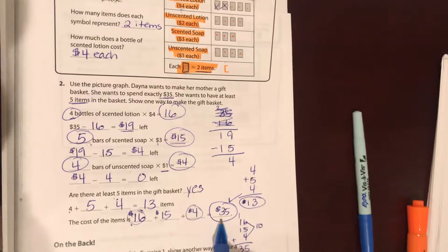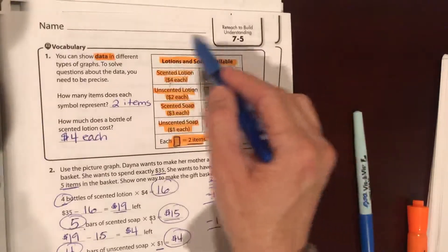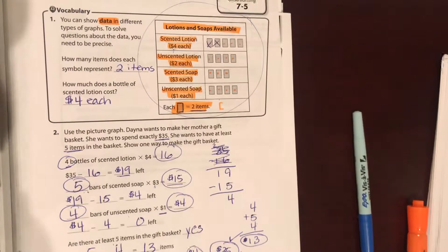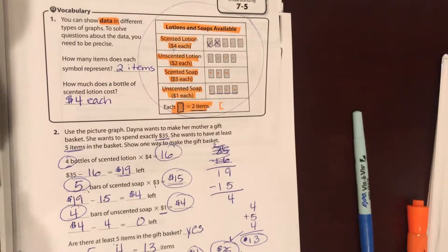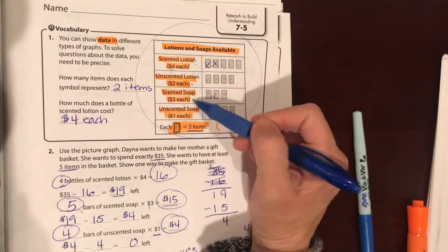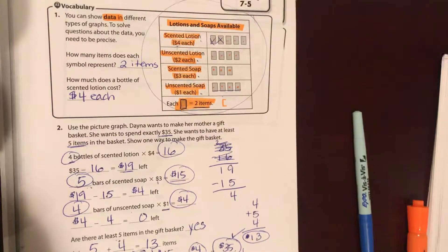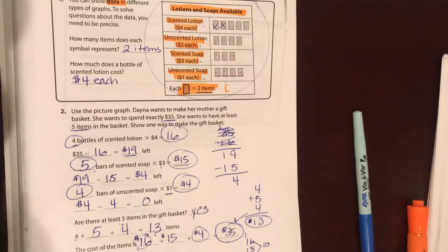Using this picture graph on the back, show another way to make a gift basket that totals exactly thirty-five dollars. You can't buy thirty-five bars of unscented soap because you only have eight of them to buy. But play with it, you can buy some scented lotion, some unscented lotion, some scented soap, some unscented soap. You can put as many items as you want in there, there's no minimum or maximum in your basket, but you do need to total exactly thirty-five dollars.